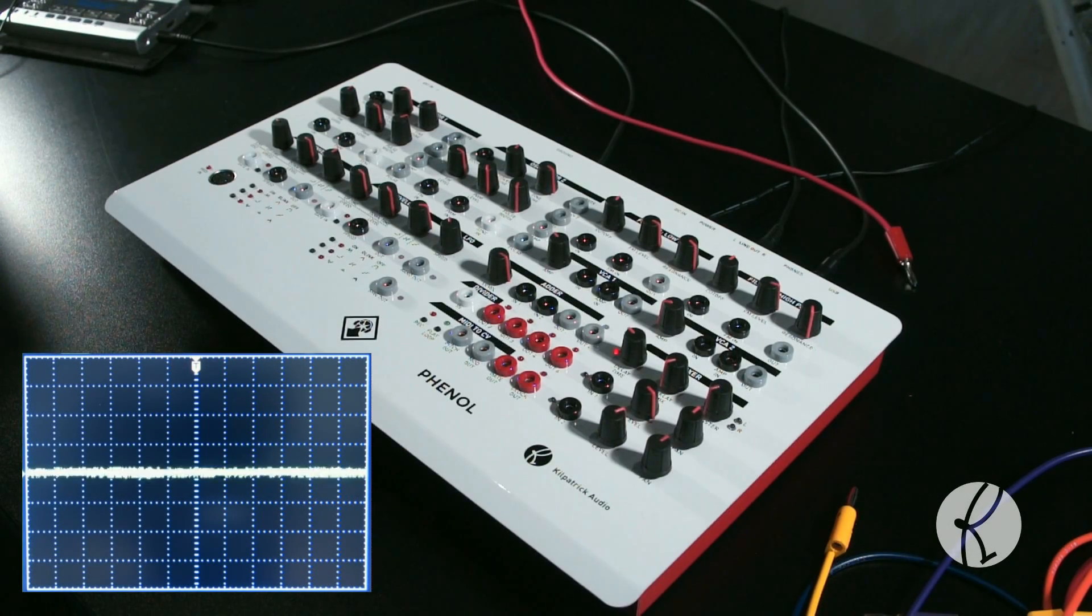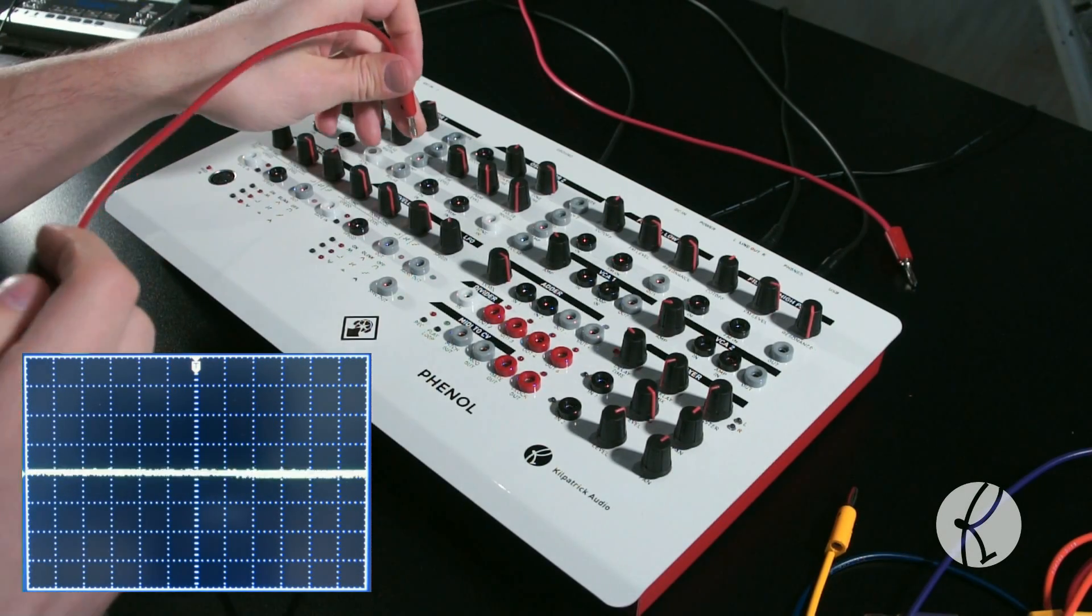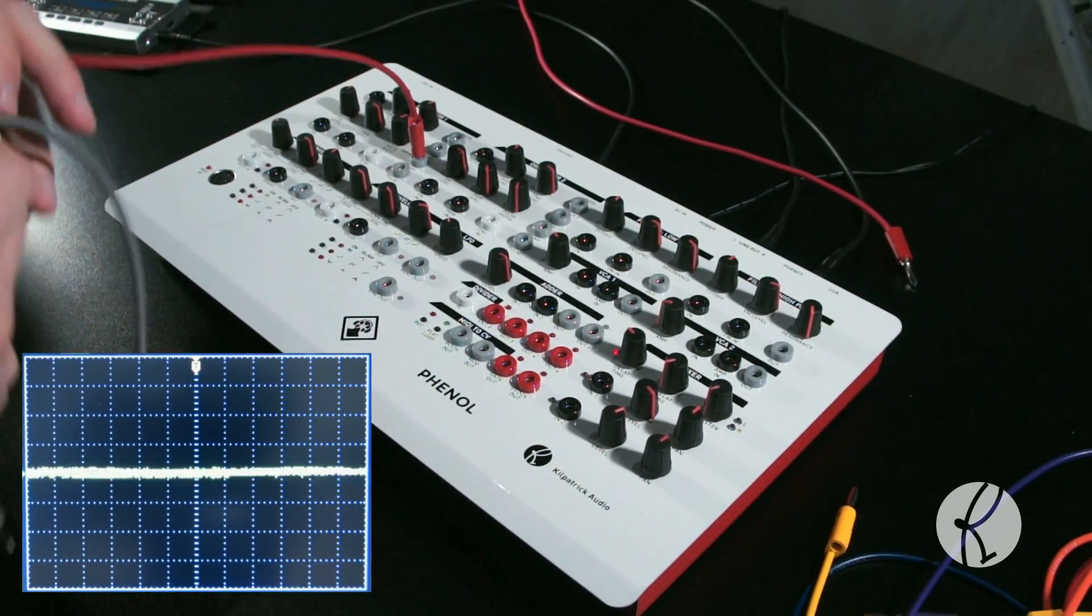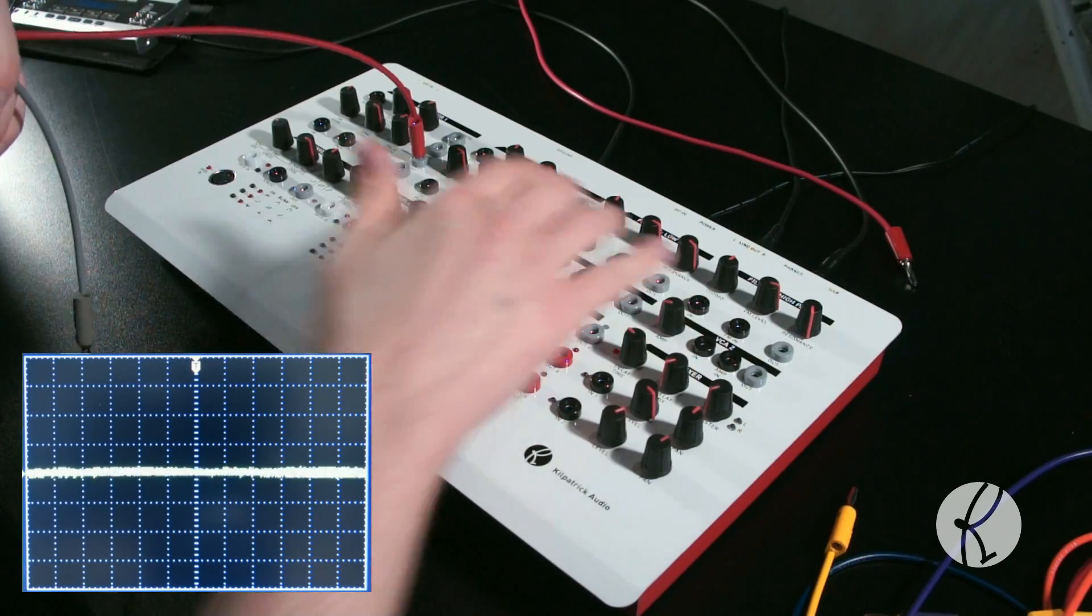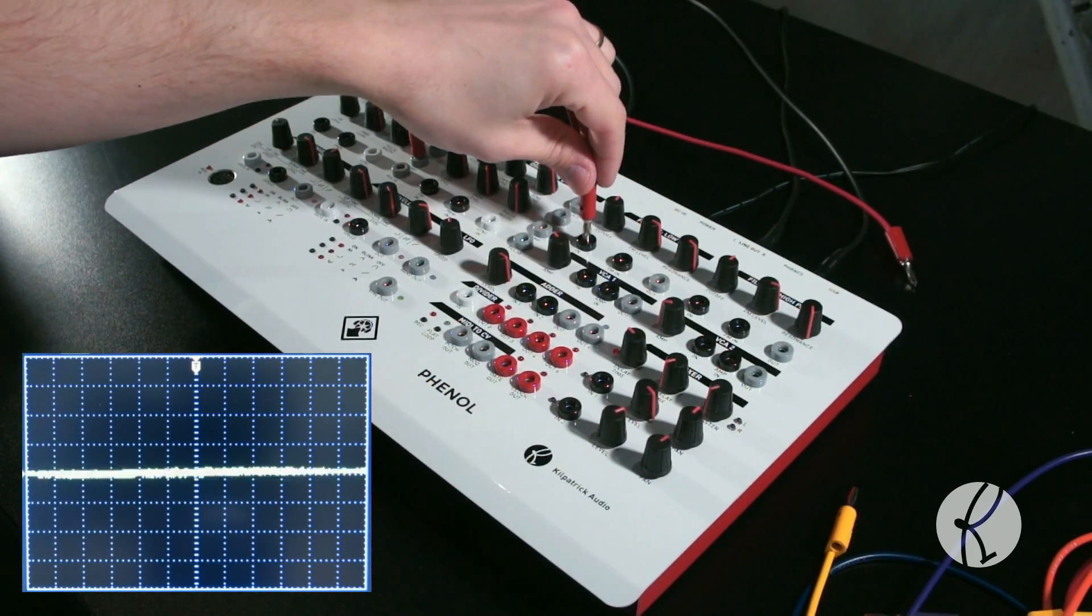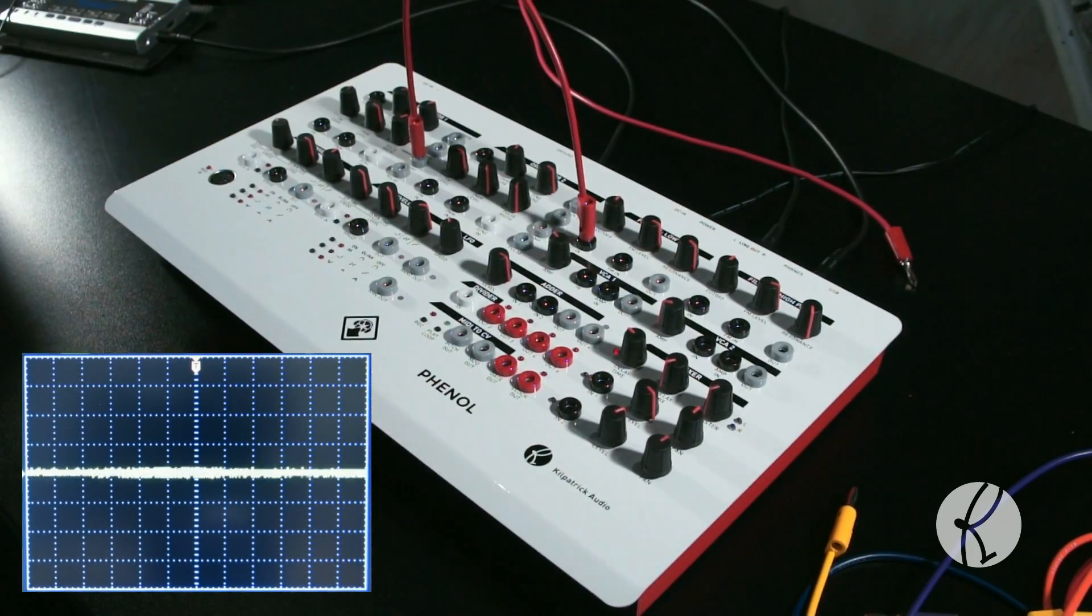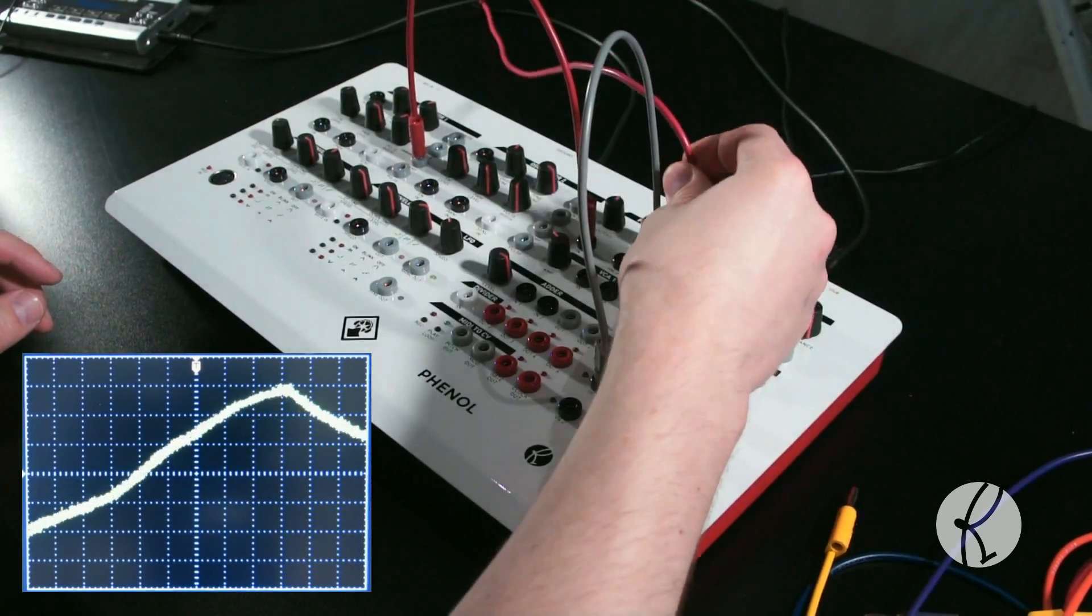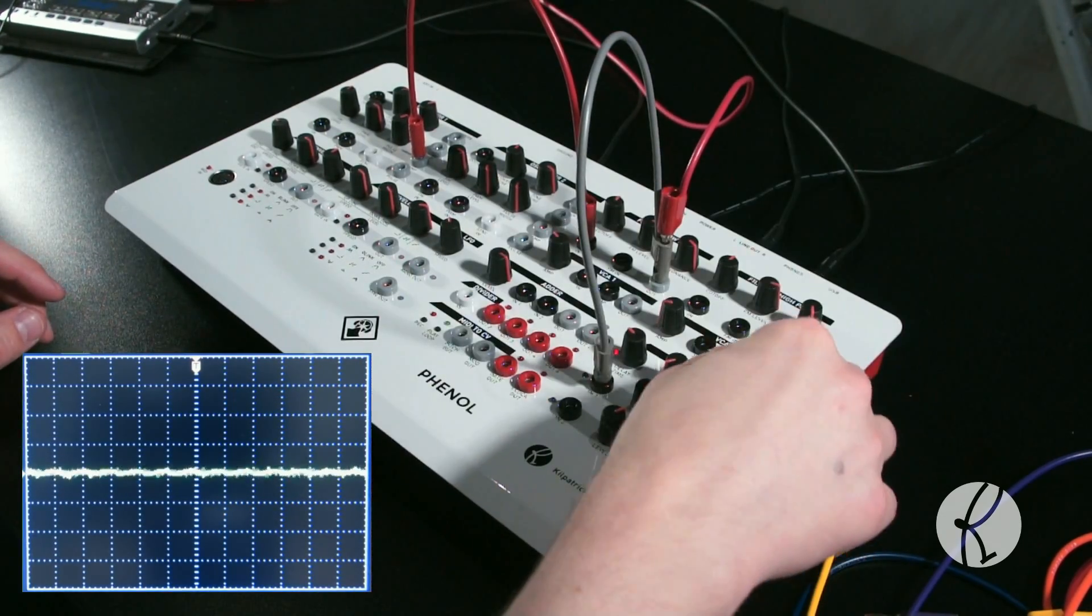Phenol has two kinds of filters: a low-pass filter and a high-pass filter. Filters are used for changing the timbre or the harmonic structure of the sound. Low-pass filters pass low frequencies while blocking high frequencies, and high-pass filters pass high frequencies while blocking low frequencies.